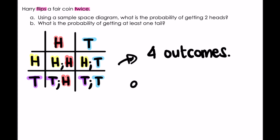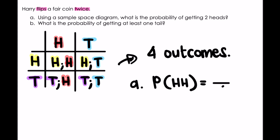Question A says: what is the probability of getting two heads? So what's the probability of getting heads-heads? We have four outcomes in total, and how many are both heads? One. So we have a one out of four chance of getting heads-heads.